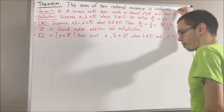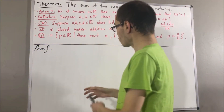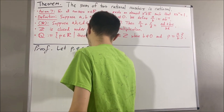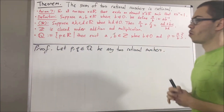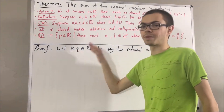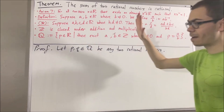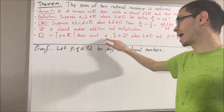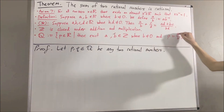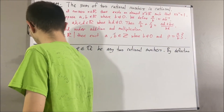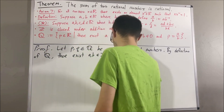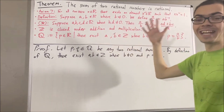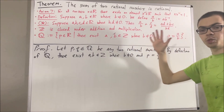Let's get into proving this theorem. To start the proof, let's give ourselves two arbitrary rational numbers — I'll call them p and q. The whole goal is to show that p plus q is a rational number. By definition of the rational numbers, since p is a rational number, there exist integers a and b where b is non-zero and p is equal to a over b. Since q is a rational number, there exist integers c and d such that d is non-zero and q is equal to c over d.